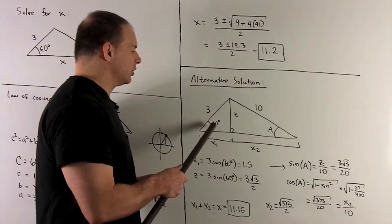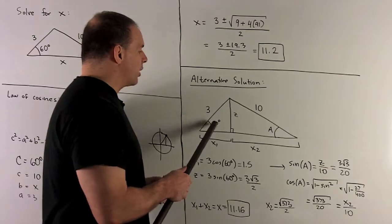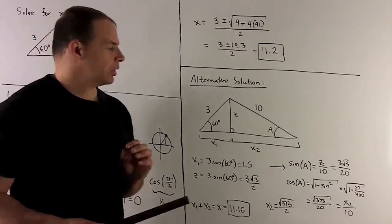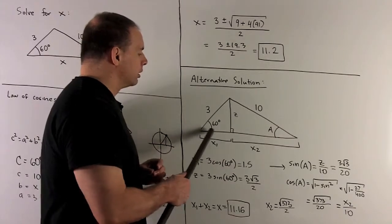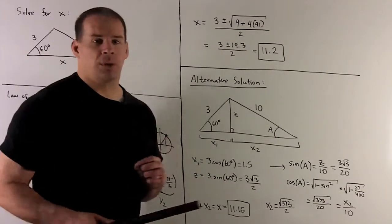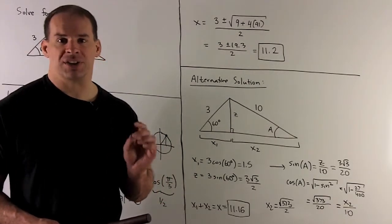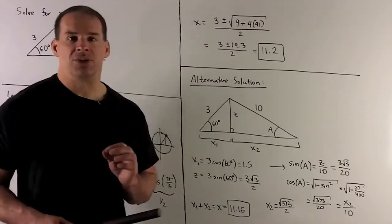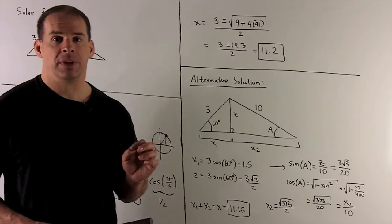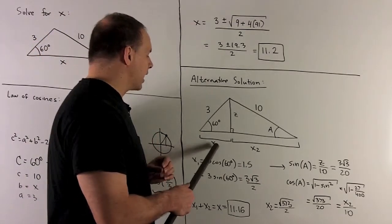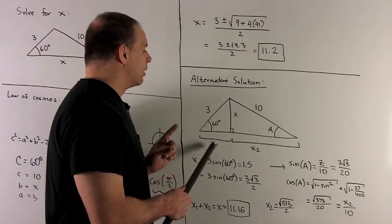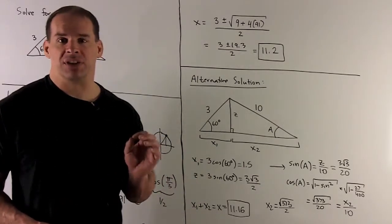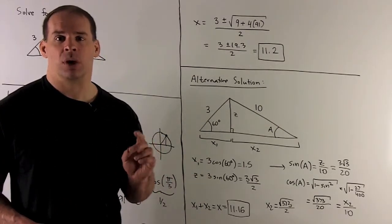Starting with the 60-degree angle, I have an angle and a hypotenuse, so I can find the other two sides. For x1, the base (adjacent side), that's going to be 3 times the cosine of 60 degrees, which gives me 3 times 1 half, so x1 equals 1 and a half. For the opposite side z, that's 3 times the sine of 60 degrees, giving 3 square root of 3 over 2.